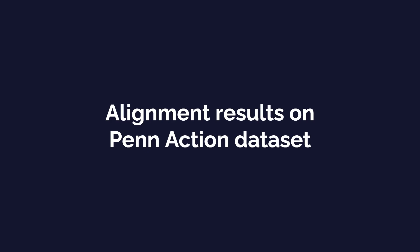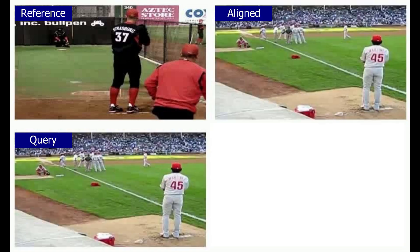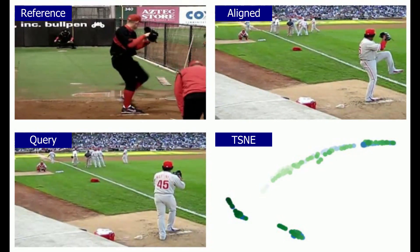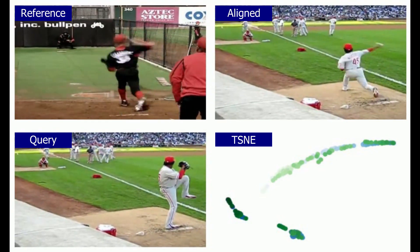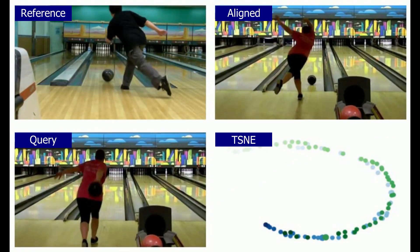We show our alignment results on the PIN action dataset. Here we show the reference video, the query video, the result of aligning the query video with the reference video, and the TSNE visualization of the embeddings of these two videos. In this visualization, each point denotes a frame, and green and blue shades denote the two videos. Our method is able to reliably align two videos of the same action type despite large variance in scene, appearance, and motion.